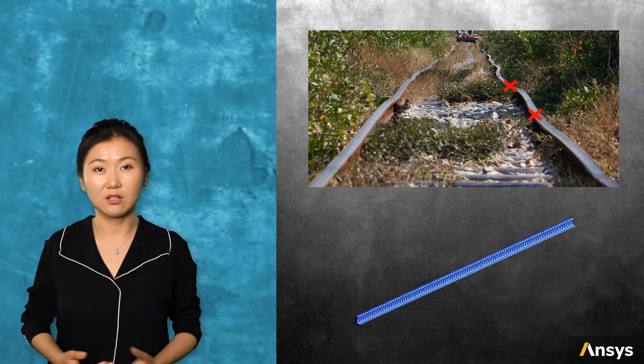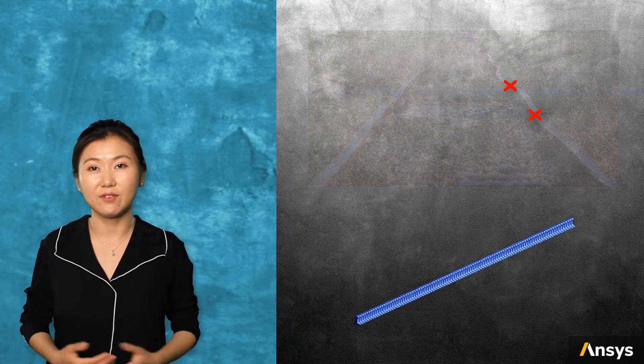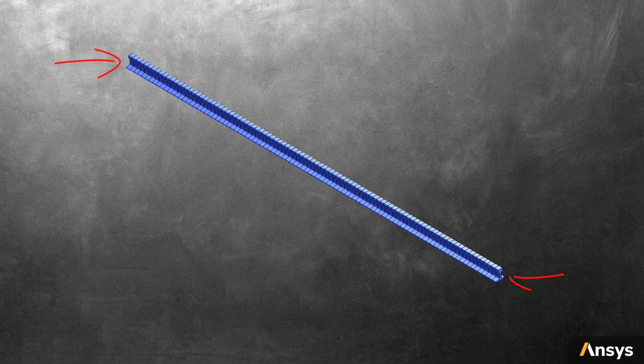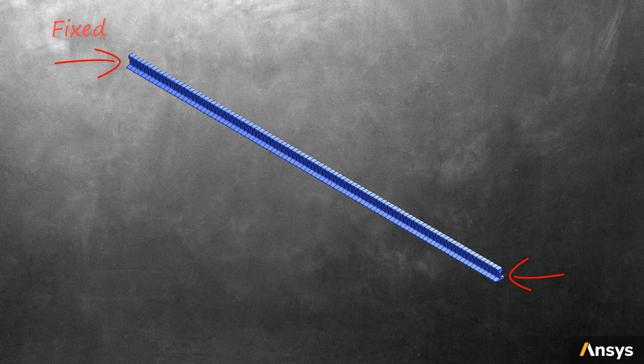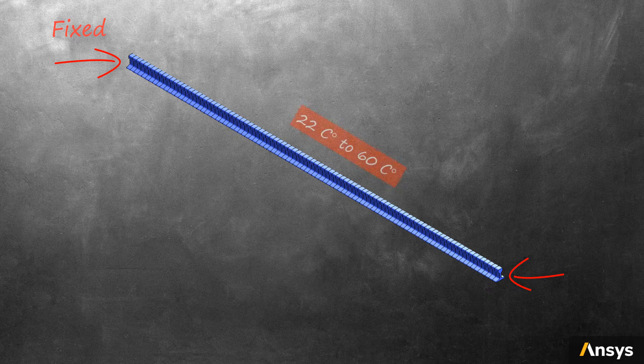When buckling occurs, the intermediate connections to the ground are usually not in function. Let's ignore the effect of these intermediate connections and assume that the two ends of the rail with certain lengths are fixed. The rail is heated from 22 Celsius degrees to 60 degrees over the entire body.